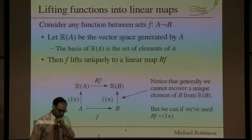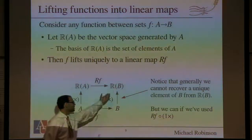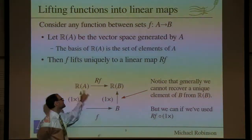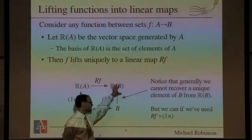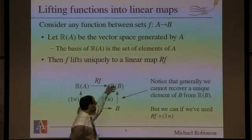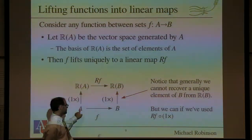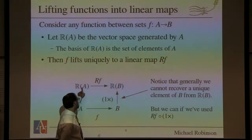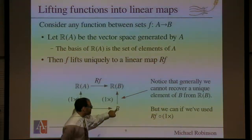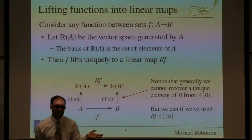The way you define RF is by writing it down on the basis and extending it to the rest of the vector space. It's usually very easy to write down as a matrix if A and B are finite sets. The nice thing is that this diagram commutes — this function RF is capturing the effect of F. Generally there are more elements in RA than in A, so if I take a typical element of RB I won't be able to invert this map. But if I start with an element of A, map it up and then over, I can pull it back because the diagram commutes.